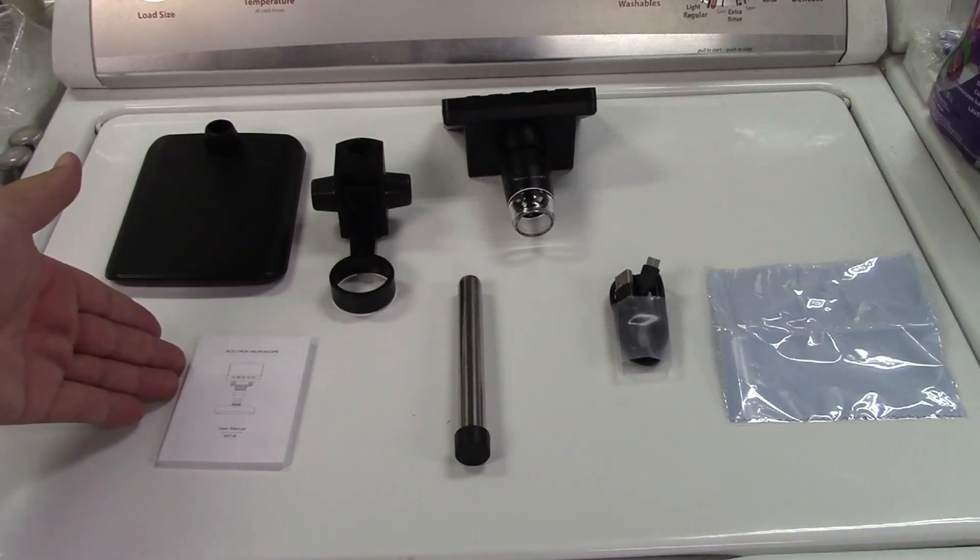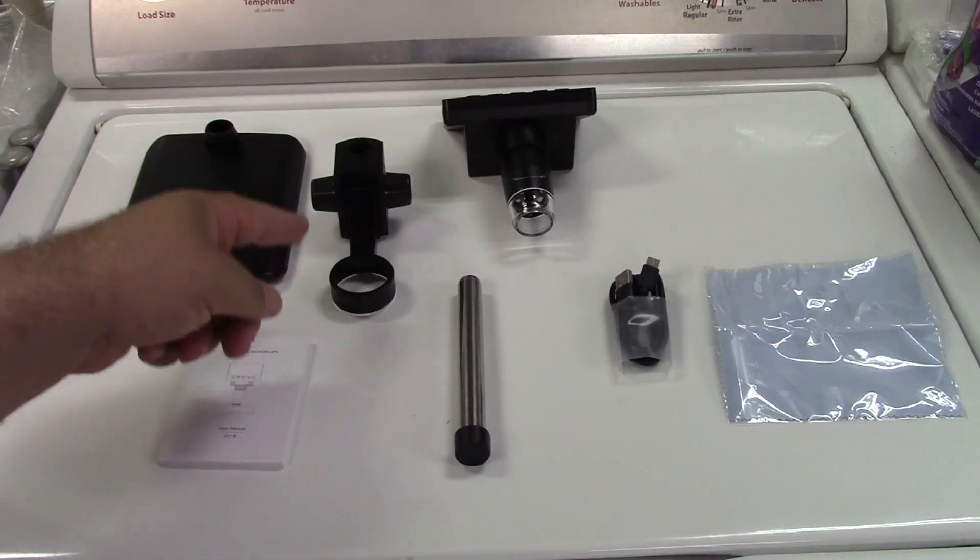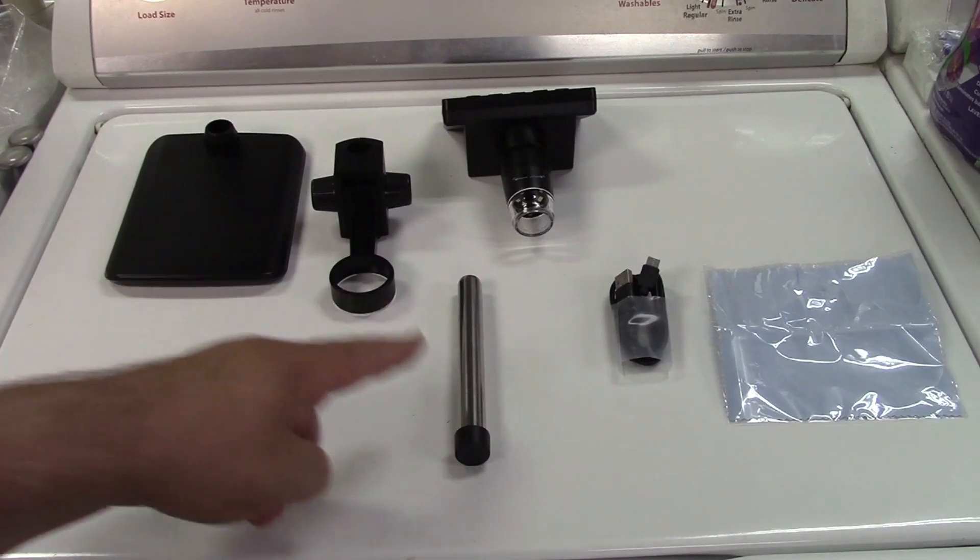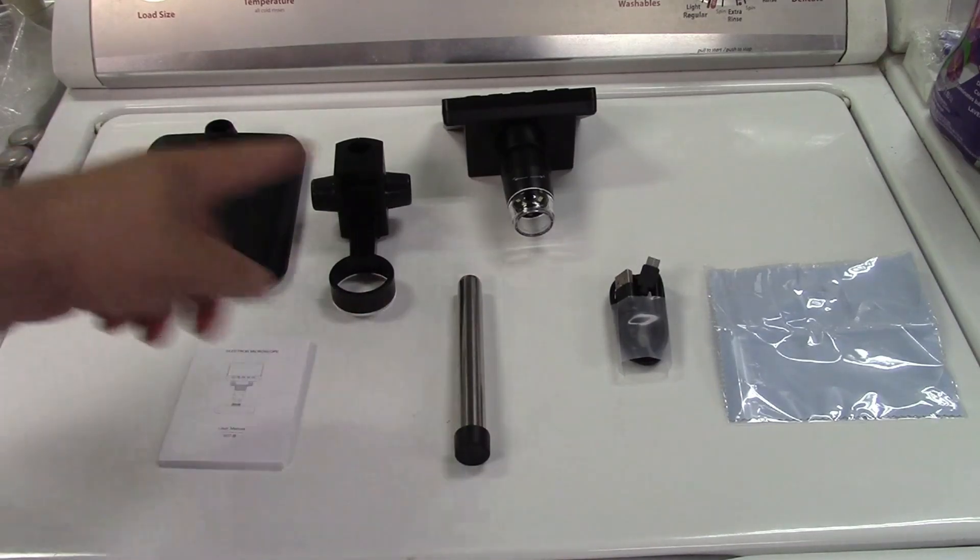In the box you get the instruction manual, the base for it, this is the holder for the scope which also allows you to raise and lower it, this is the column, support column, for everything.